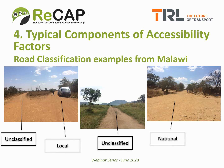As discussed in webinar number four on data sources, some roads will be part of a classified national network, some will be part of a local roads network, and still others will be unclassified. These definitions will vary between countries, but there are often at least three different types of road classification and usually at least two different types of road agency. There's often very little difference to be observed on the ground between roads with different classifications, as can be seen in these photos from Malawi taken in 2019. Note that even the unclassified network often provides an important rural access function.